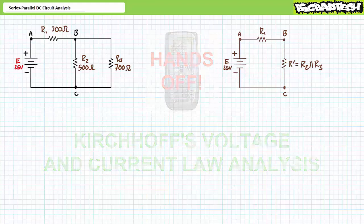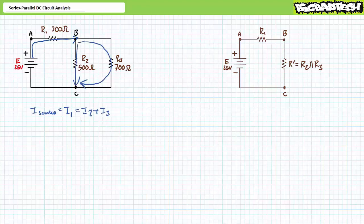Let's look at how current flows through our first example using Kirchhoff's current law. Source current must travel through R1. Then it splits into two paths — one traveling through R2, the other traveling through R3. It can be said that source current equals I1, which equals I2 plus I3. This analysis reinforces our earlier conclusion that R2 is in parallel with R3 — a simplification I'm calling R single prime — where R single prime is in series with R1.